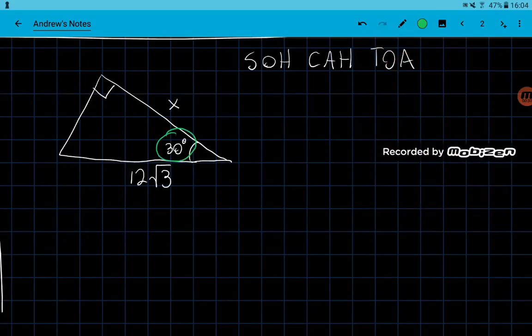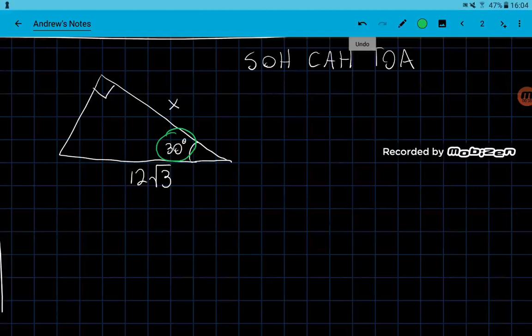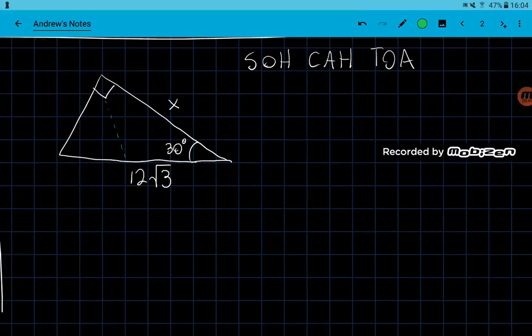So we have our 30 degree angle here and you need to identify the hypotenuse first. So remember the hypotenuse is always the one that's on the other side of the 90 degree angle and it's always the longest side. So this is our hypotenuse, so I'm going to just label it H.